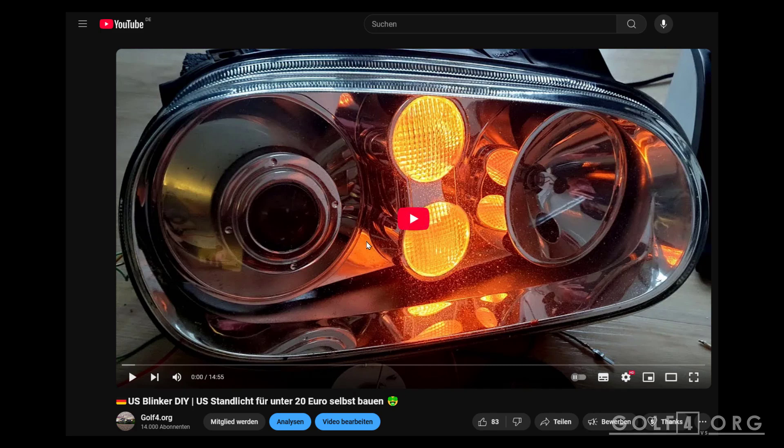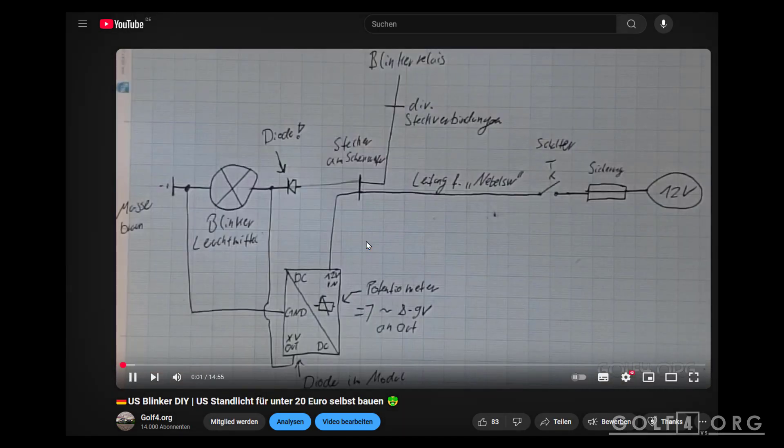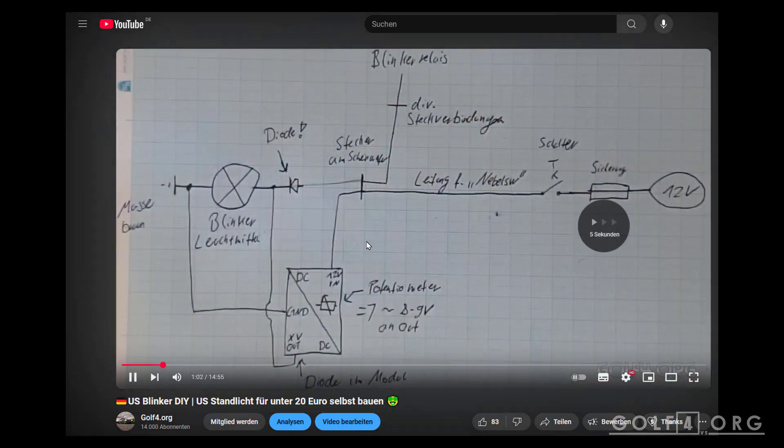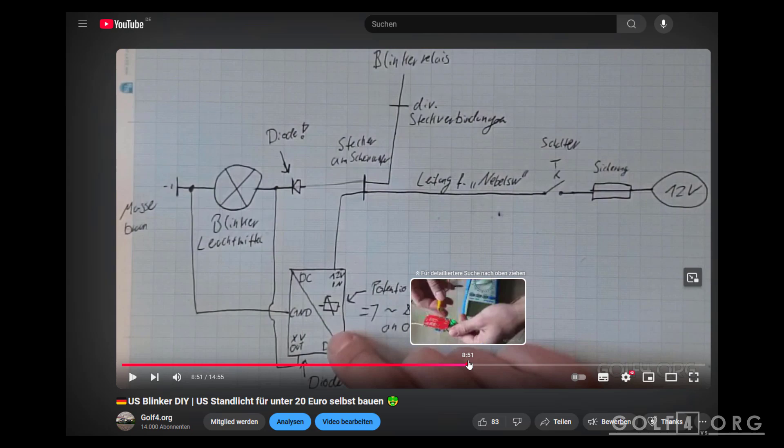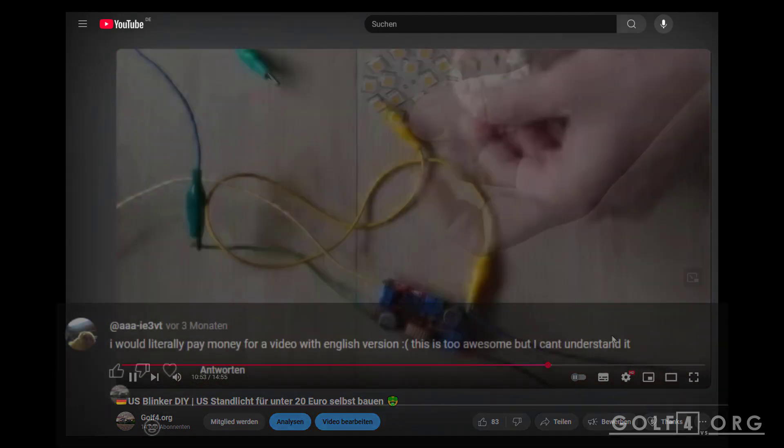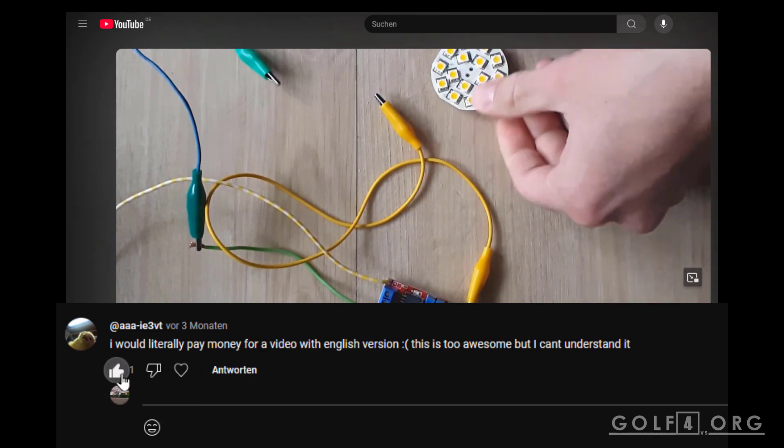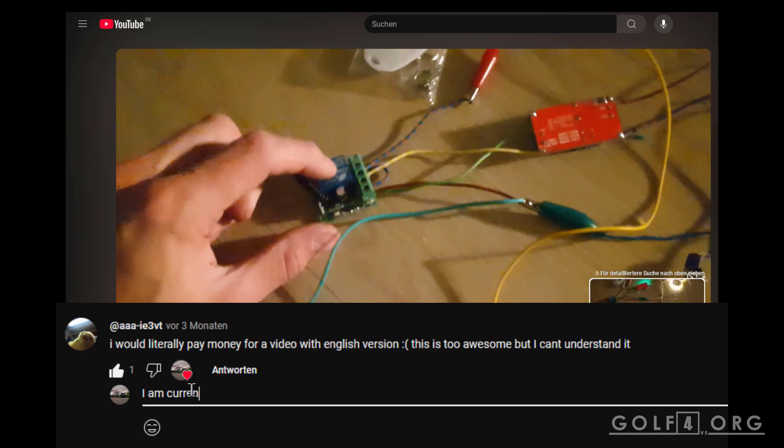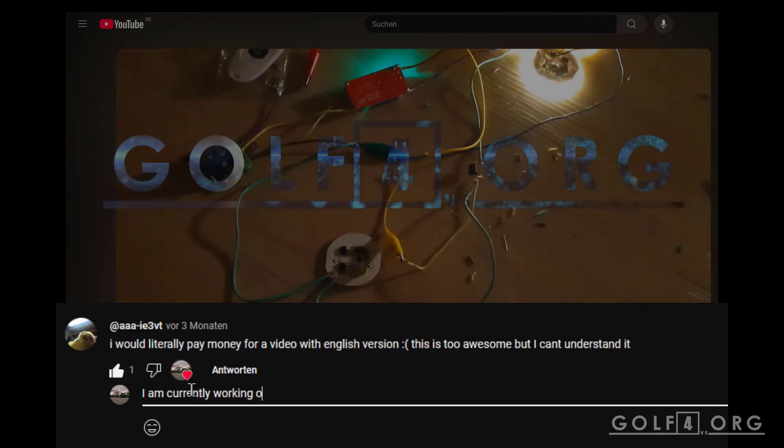Maybe you know my video about the US blinker or US indicator lights, which I did around two or three years ago. I drew the schematic and showed the DC-DC buck converter and did some testing. Now a user asked if I could make this video again in English, and yes, I think I can.